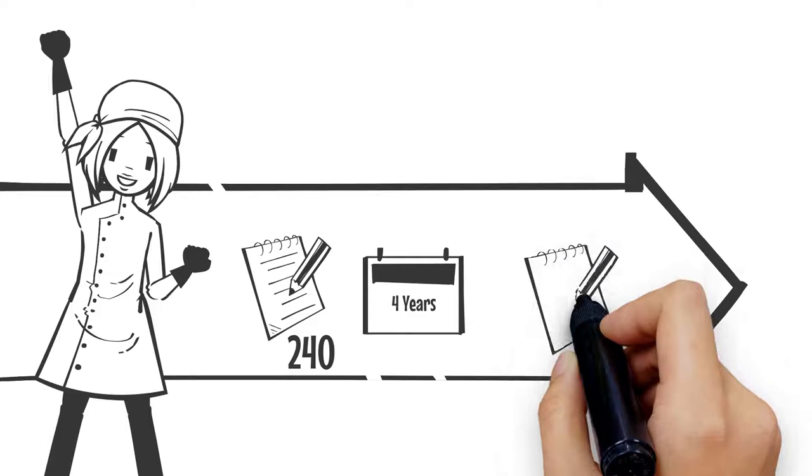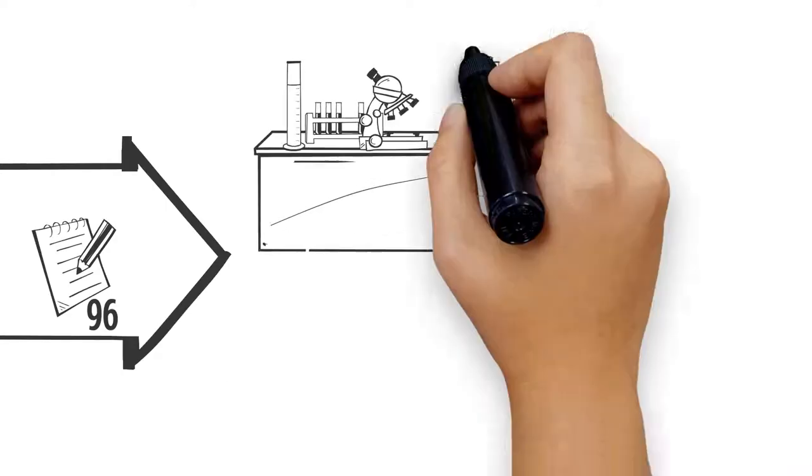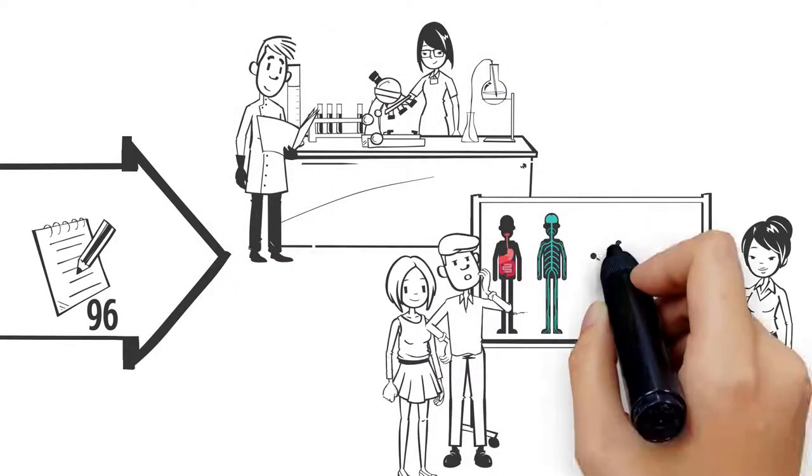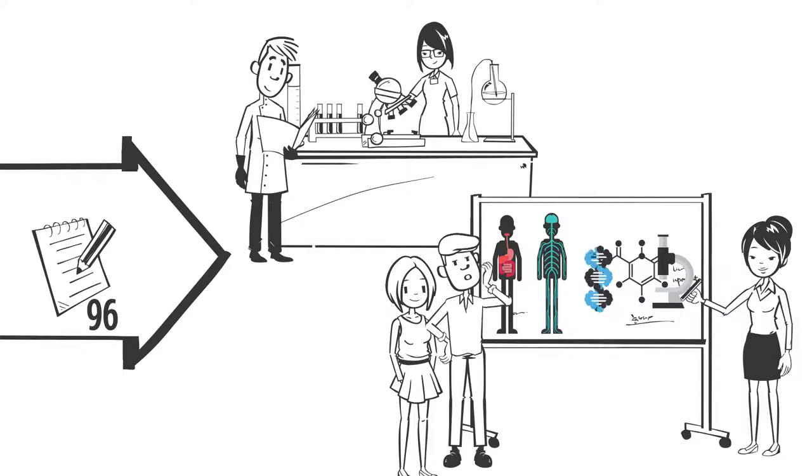Students are required to complete 240 credits across the four years, of which 96 credits comprise the major in biomedical sciences, covering the human body and cutting-edge biomedical research methodologies.